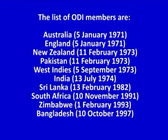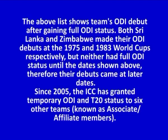The list of permanent ODI members is: Australia, England, New Zealand, Pakistan, West Indies, India, Sri Lanka, South Africa, Zimbabwe and Bangladesh. The list shows teams' ODI debut after gaining full ODI status. Both Sri Lanka and Zimbabwe made their ODI debuts at the 1975 and 1983 World Cups respectively, but neither had full ODI status until the dates shown. Therefore, their debuts came at later dates.